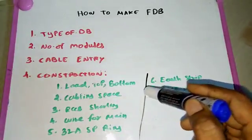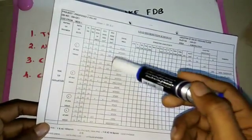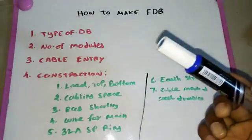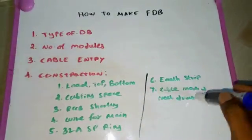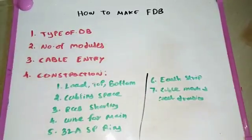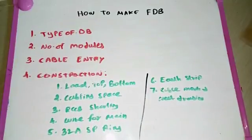The earth strip holes are calculated as the number of circuits plus 5 extra points. For 18 circuits, that is 18 plus 5 equals 23 holes. Finally, we do cable marking and cable dressing to complete the DB. This is a very simple method for making a final distribution board. If you have any doubts, please comment, and don't forget to subscribe.